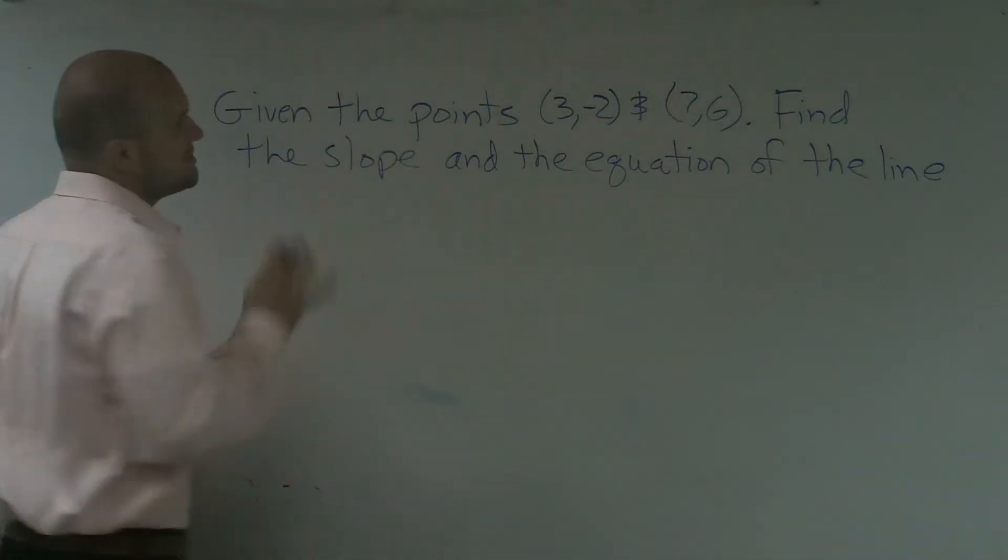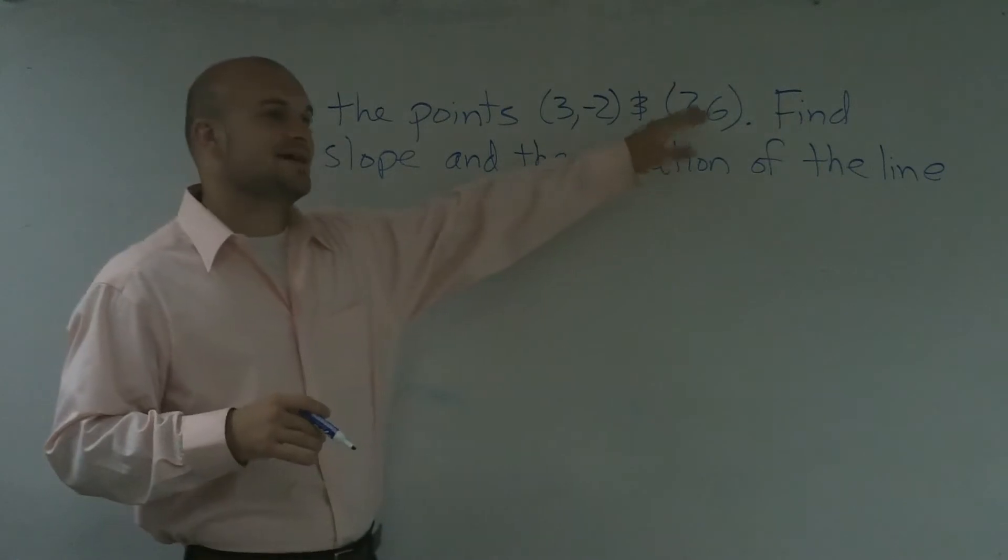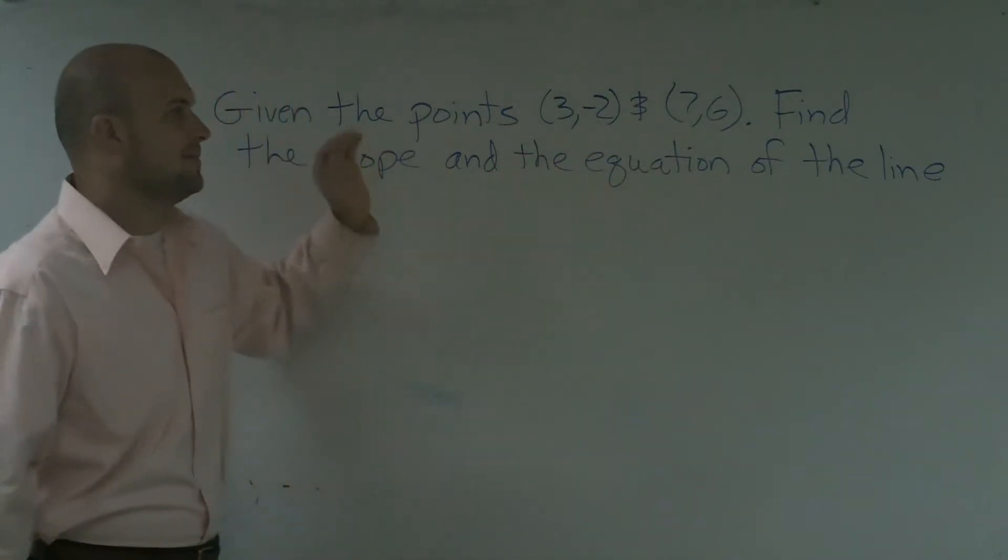All right, what I'd like to show you guys is given two points, 3 and negative 2, and 7 comma 6, find the slope and the equation of the line.